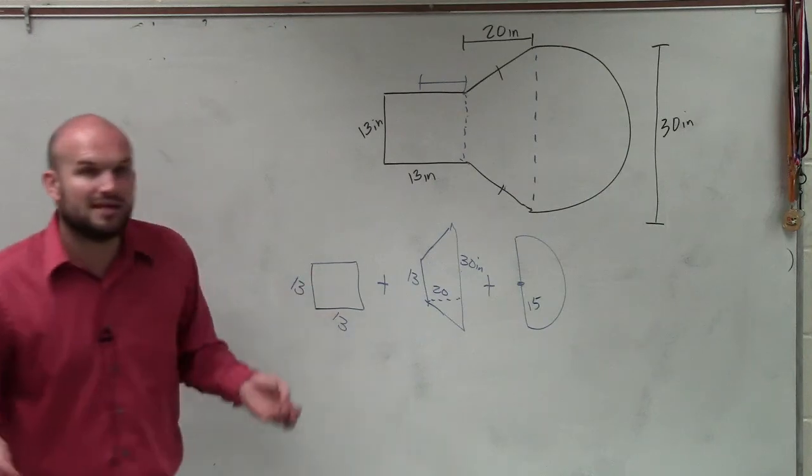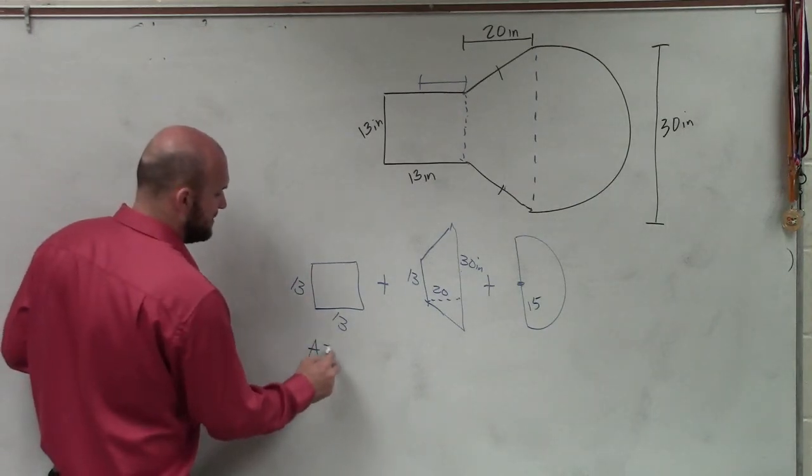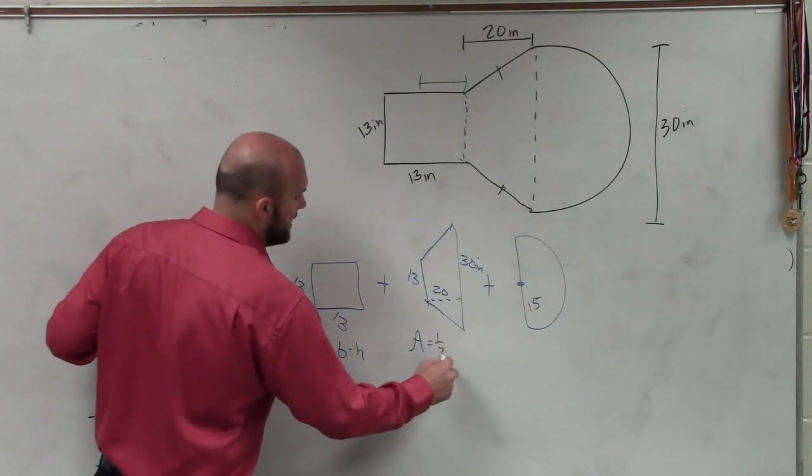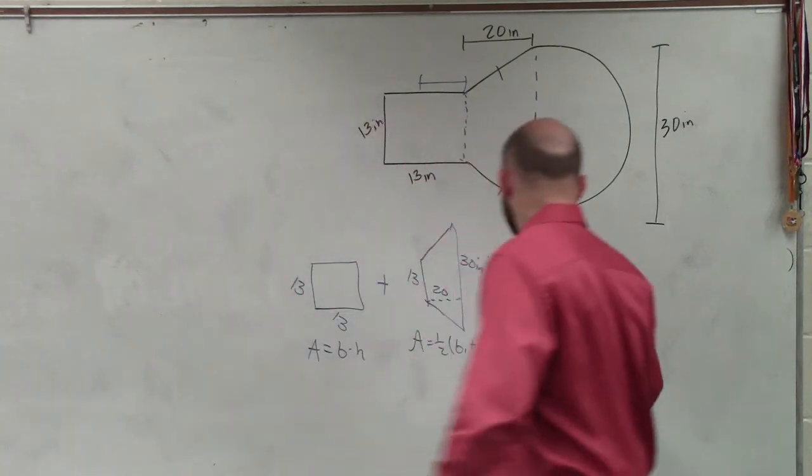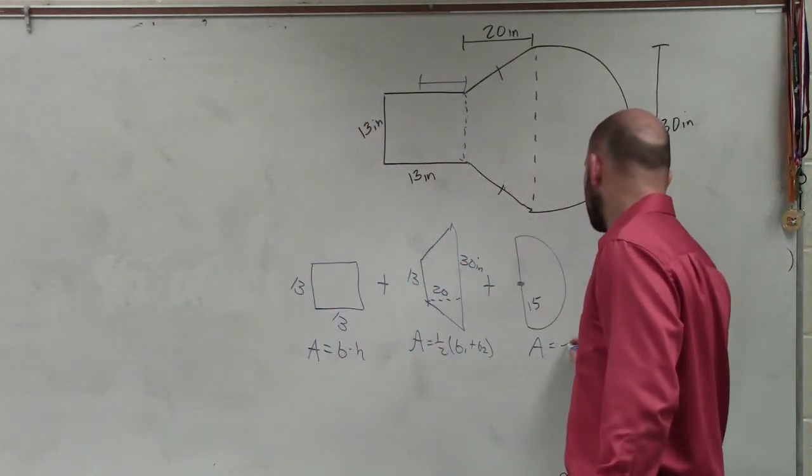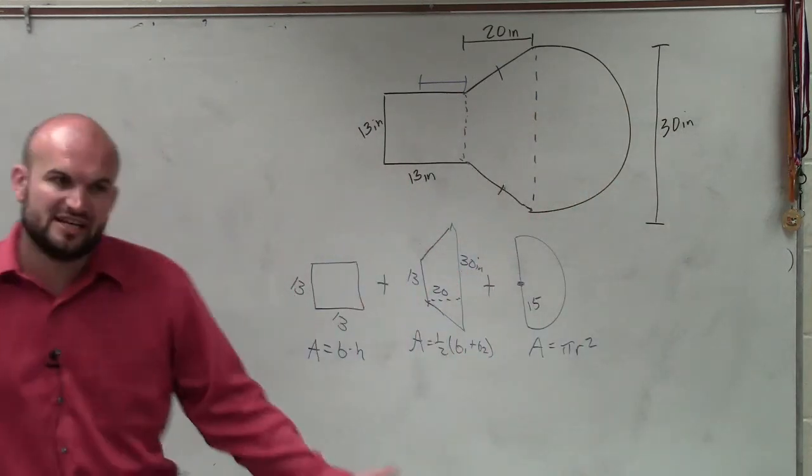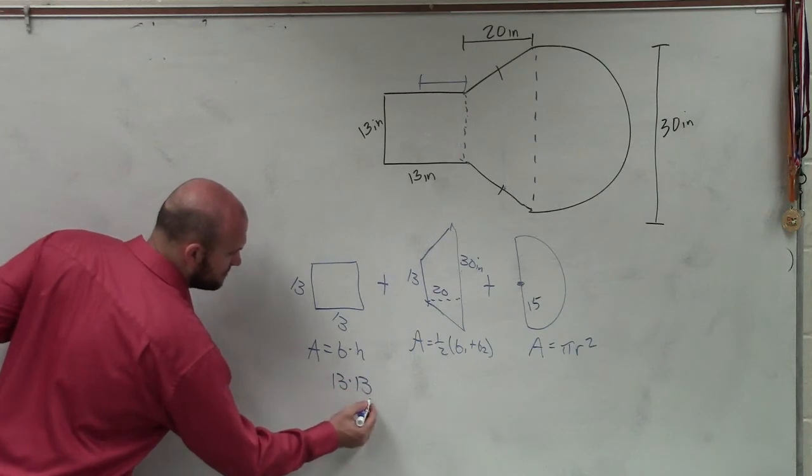So now, ladies and gentlemen, let's compute the area of each one of these separately. This area equals base times height. This area equals one half base 1 plus base 2. This area equals pi r squared. So what I'm going to do is I'm just going to compute each area. This is 13 times 13.